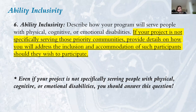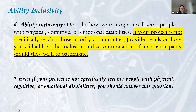Question six is on ability inclusivity. Describe how the program will serve people with physical, cognitive, or emotional disabilities. This is a scored question whether or not your project specifically serves those communities — please answer it regardless. Even if your program doesn't specifically serve people with disabilities, any community you serve will likely have participants that fit this description, and we want to see you thinking about it.